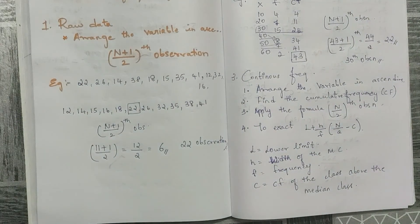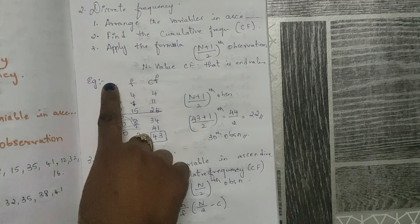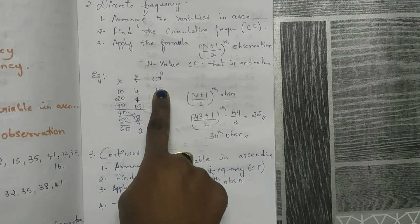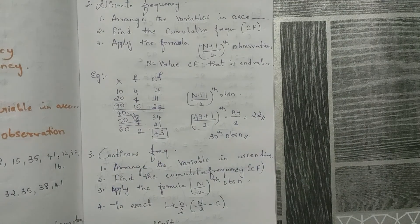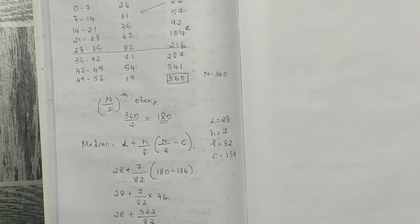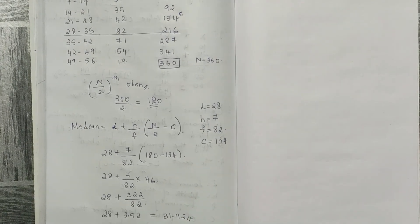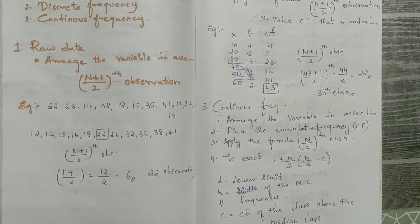To summarize: for raw data, arrange values in ascending order and apply (n+1)/2 th observation. For discrete frequency, find the cumulative frequency and use (n+1)/2, where n is the last CF value. For continuous frequency distribution, find n/2, identify the median class from CF, then apply the formula l + (h/f) × (n/2 − c) to get the exact value. Thank you for watching — please subscribe, like, and share.